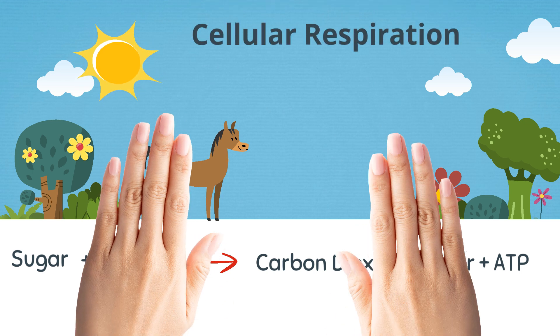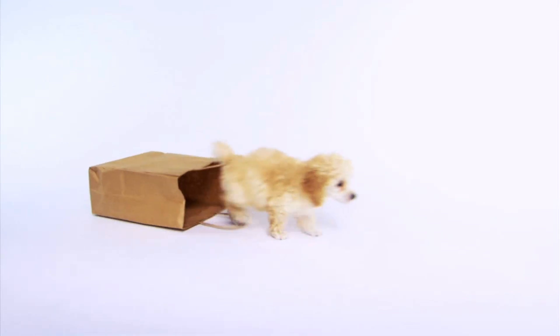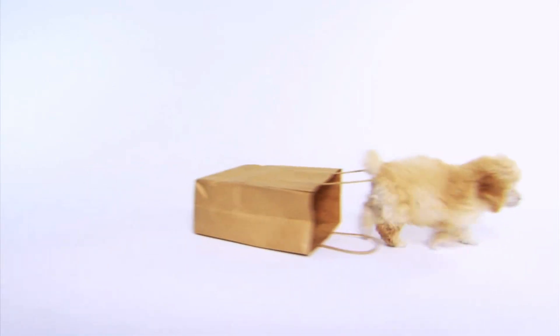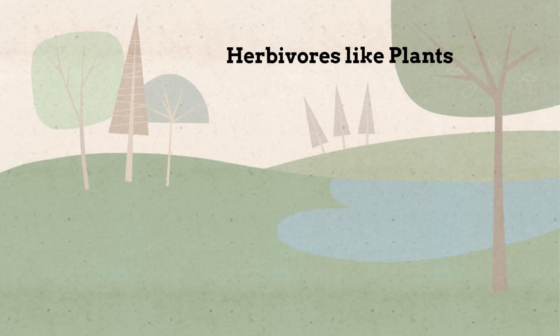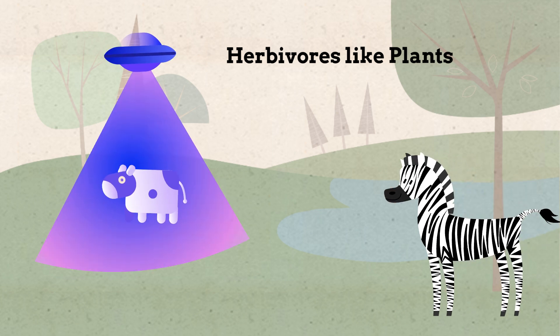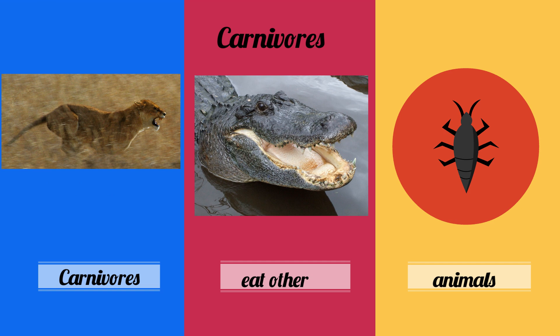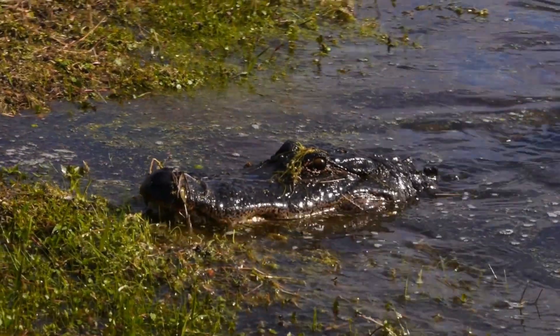Although all heterotrophs cannot practice photosynthesis, there are several different types. Up first is herbivore — when it's time for a meal, herbivores like plants and only plants. Cows and zebras are examples. With carnivores, when it's time for a meal, they like other animals. Some common examples are alligators and lions.